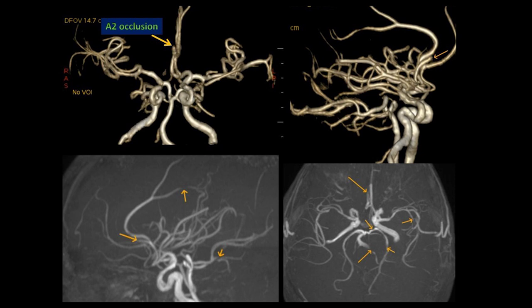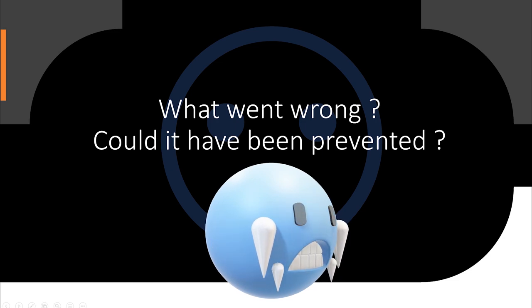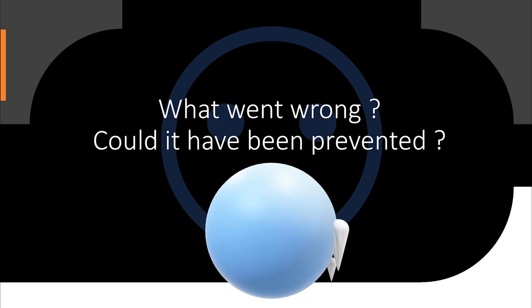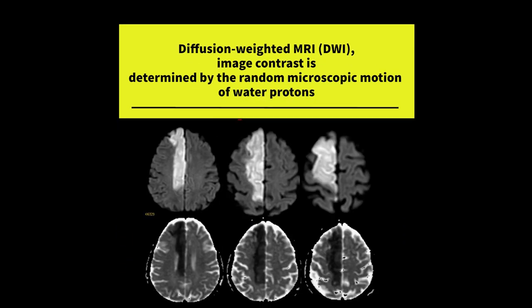These stenoses confirm that the infarct is of atherosclerotic origin. The question here is: what went wrong? Were there any signs to detect the infarct in the initial MRI? We all know that diffusion weighted imaging is by far the most sensitive technique to detect hyperacute or acute infarcts.